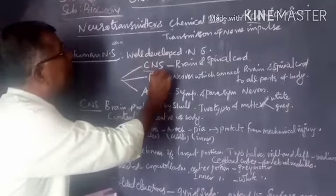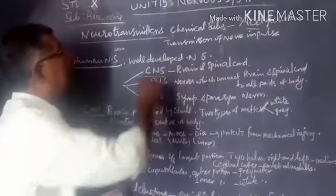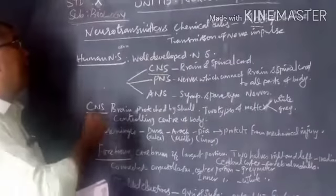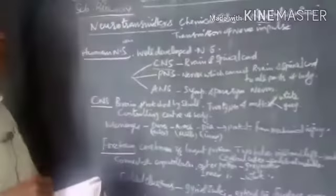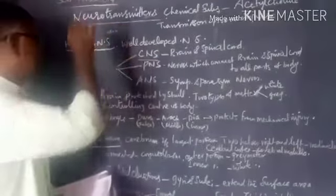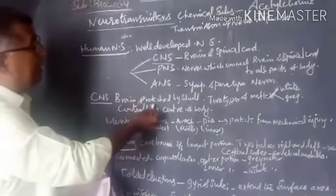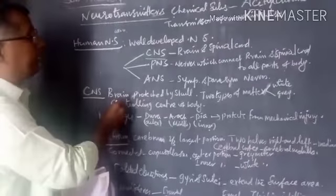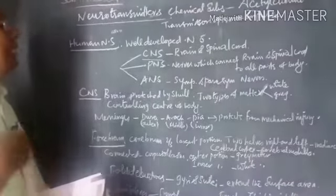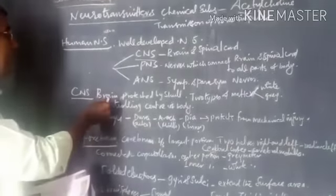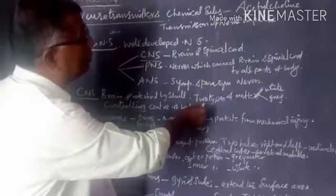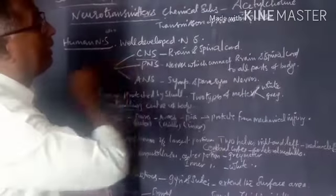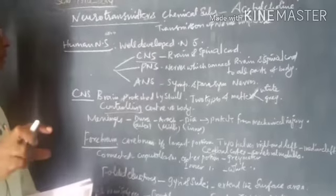The brain and spinal cord are well developed in humans. They process information and control the whole body. The brain is protected by the skull and the spinal cord by the vertebral column. The central nervous system has two types of matter — white matter and gray matter — depending upon the presence or absence of the myelin sheath on the neuron.